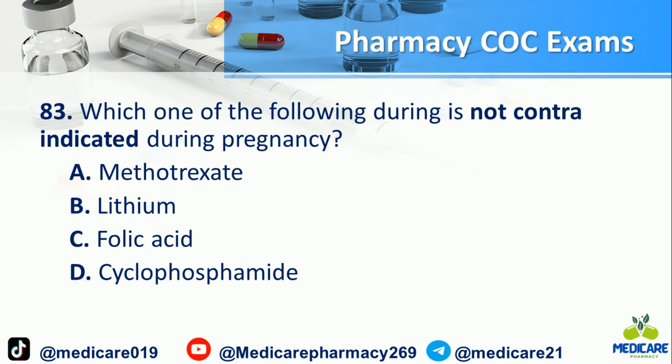Number 83: Which one of the following drugs is not contraindicated during pregnancy? a. Methotrexate. b. Lithium. c. Folic acid. d. Cyclophosphamide. The answer is C.